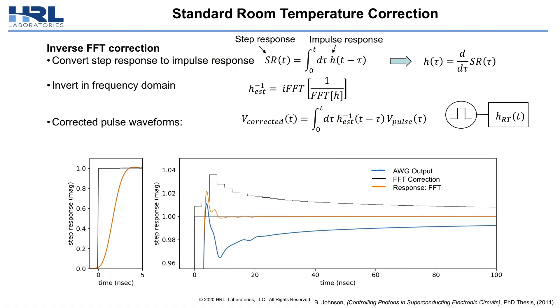To correct for this distortion, we use a standard inverse fast Fourier transform correction where we take this step response, or a fit of it, and perform the time derivative to create an impulse response. We then invert this in the frequency domain, and to create corrected waveforms or pulse trains, we apply this pre-distortion kernel to our desired pulse train. At the output, we should get the waveforms that we're desiring to send to the qubits.